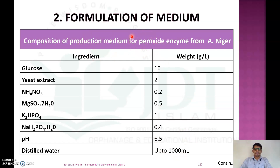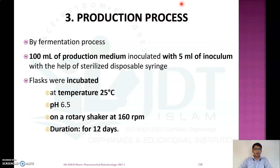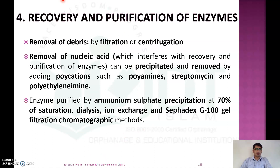The production process is carried out by fermentation: 100 ml of production medium is inoculated with 5 ml of inoculum (5% of working volume). This is incubated in a fermenter at 25°C, pH 6.5, with a rotary shaking speed of 160 rpm, for a duration of 12 days. After 12 days, the process moves to recovery and purification.